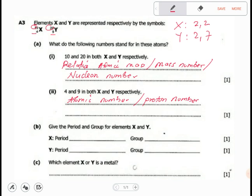Now, period is determined by how many shells are there. X has got two shells, 1,2, so this is in period 2. Y has got two shells, 1,2. This is also period 2.